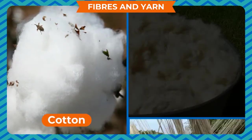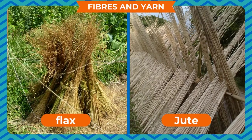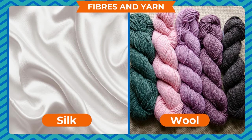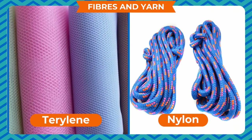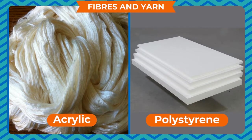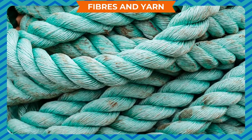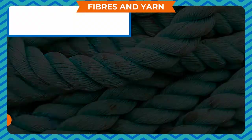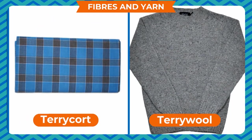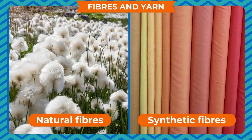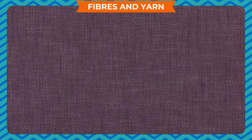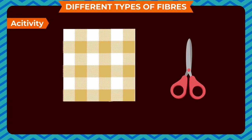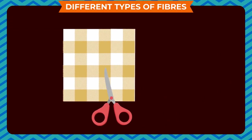Fibers are of two main types: natural and artificial. Natural fibers like cotton, jute, and flax are obtained from plants, while silk and wool are obtained from animals. Terylene, nylon, acrylic, and polyester are some artificial fibers made from different chemical substances. Terricot and terry wool are made by mixing natural and synthetic fibers; these are often called blended fibers.